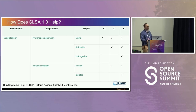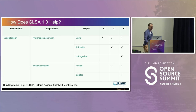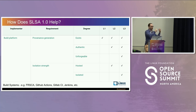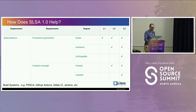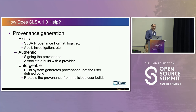The build platform is where the majority of the work happens. There are two main categories of requirements: first, generate provenance — record what source and dependencies went in, what you did in the build, and the outputs. Second, have some elements of isolation — ensure no given build can mess with another build, whether concurrent or sequential. Examples of build systems here are Tekton, GitHub Actions, GitLab CI, Jenkins, and CircleCI.